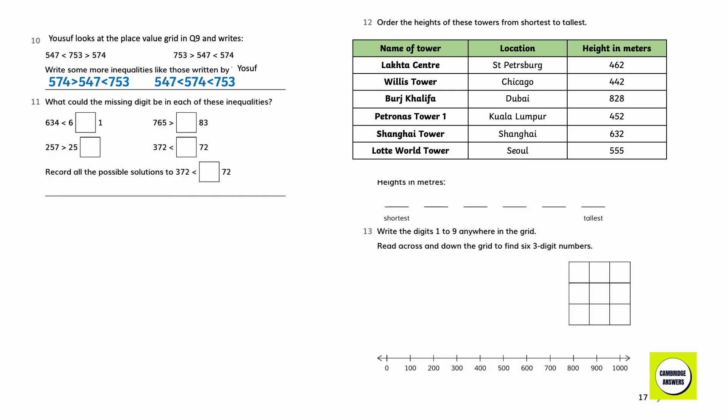What could be the missing digit in each of these inequalities? 634 is less than 641. 765 is greater than 683. 257 is greater than 253. 372 is less than 472. Record all possible solutions to 372 is less than: 472, 572, 672, 772, 872 or 972.